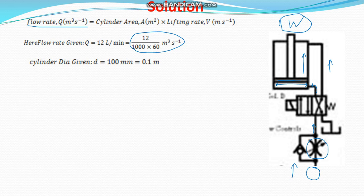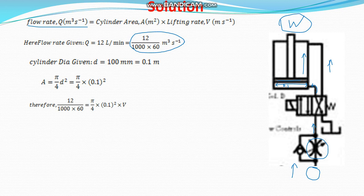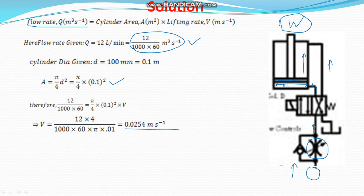The cylinder diameter is given as 100 mm, which is equivalent to 0.1 meter. Therefore, the area is equal to pi by 4 times d squared, that is pi by 4 into 0.1 squared. Putting in this area and the flow rate, we can find out the velocity of the piston, which is equal to 0.0254 meter per second. This is the lifting rate by which the load will be lifted.